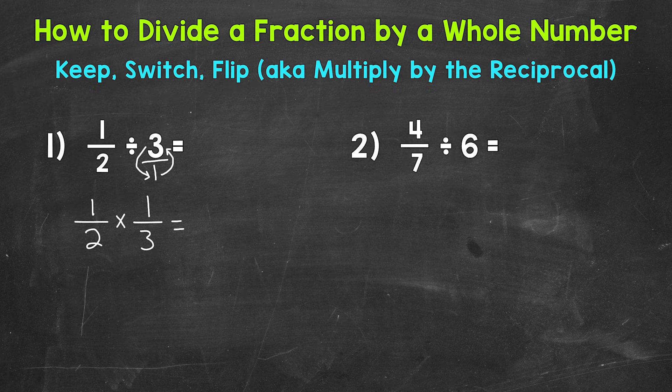Once we get to this point, we have a multiplying fractions problem. So we can multiply straight across. One times one is one, and two times three is six. So 1/6 is our final answer.